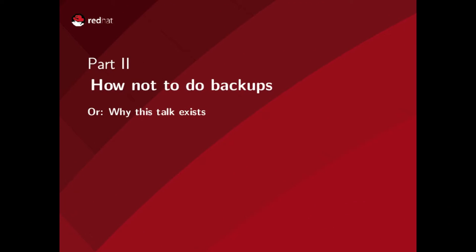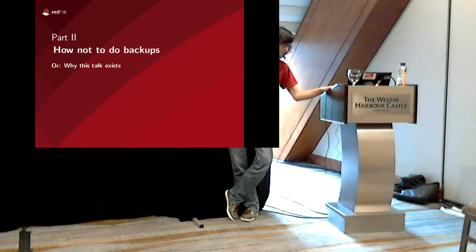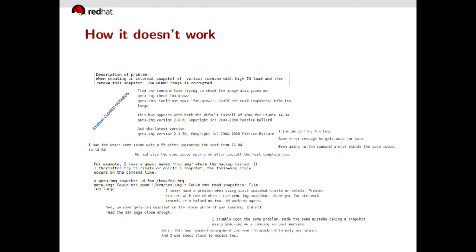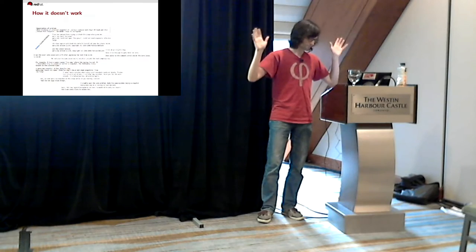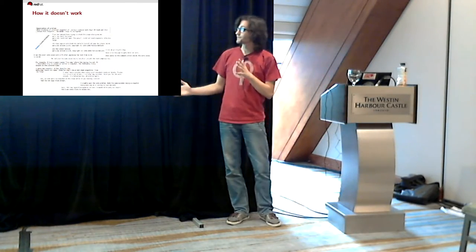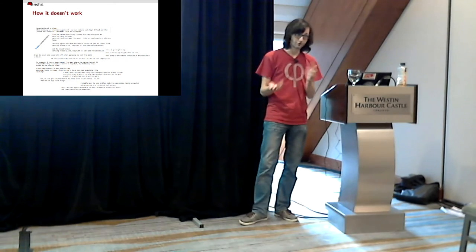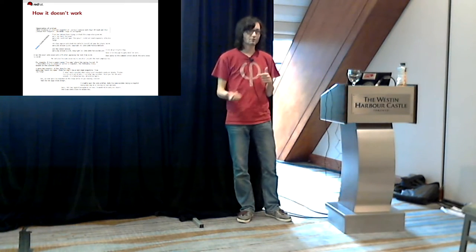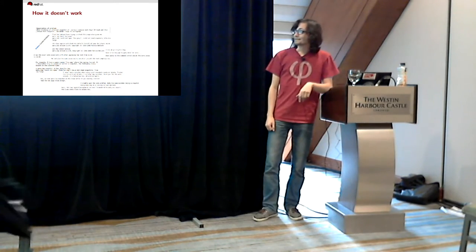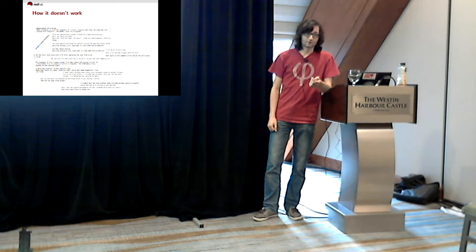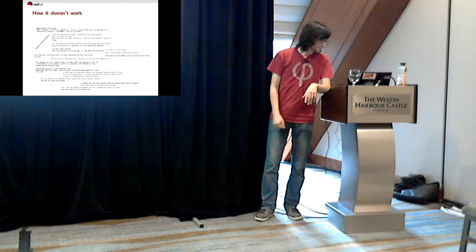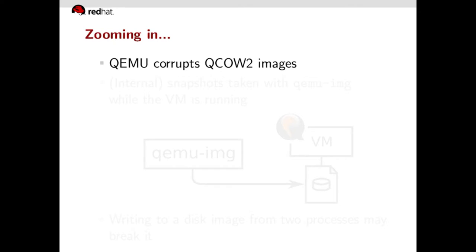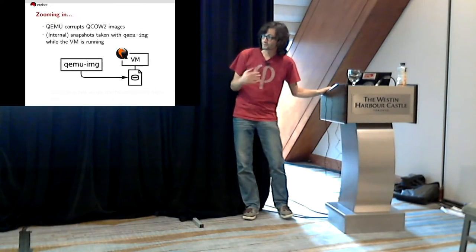Now, after we've seen what kinds of backups there are, we can talk about how not to do backups, because a lot of people do that wrong — which is also why this talk exists. We received a few bug reports like "help, everything's broken." Zooming in, we found that in all of these reports, QEMU was corrupting QCOW2 images. Someone did something to the VM and suddenly QEMU was unable to open the QCOW2 image because it was completely broken.